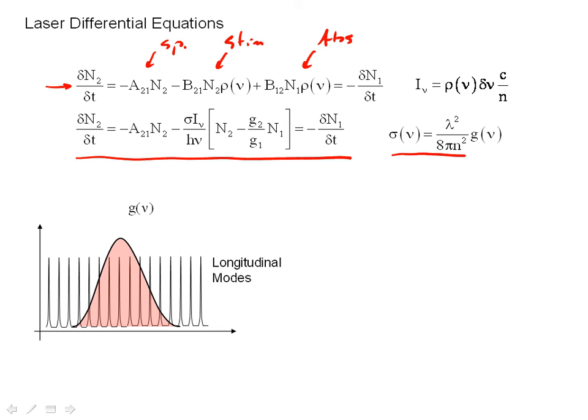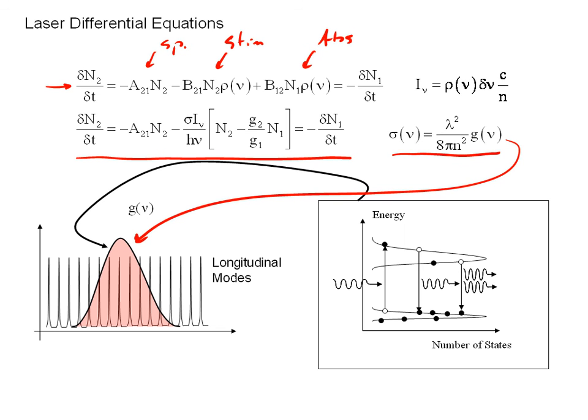This sigma term is called the cross-section. And this cross-section, at least when the wavelength range is small, is in fact proportional to the line shape. The line shape essentially determines the cross-section of the laser or how strongly we'll interact with photons. The line shape is a function of the distribution of probabilities or number of states of the atoms that make up the gain medium.